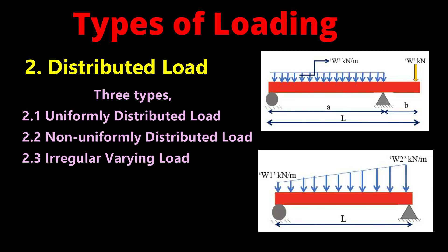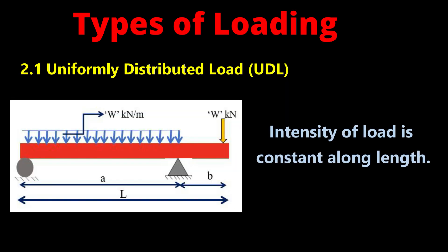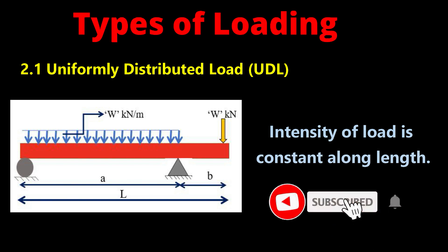The three types are uniformly distributed load, non-uniformly distributed load, and irregular varying load. First, uniformly distributed load: if the intensity of load is constant along the length, it is named UDL, uniformly distributed load.